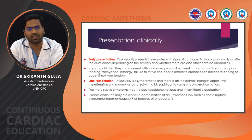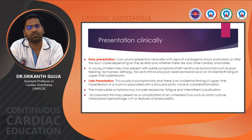In late presentation, this is usually asymptomatic with incidental finding of upper limb hypertension or murmur associated with bicuspid aortic valve or collateral formation. More subtle symptoms may include headache, fatigue, and intermittent claudication. Occasionally, it may present as a complication such as aortic rupture, intracranial hemorrhage, LV failure, or features of endocarditis.